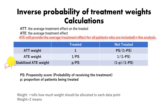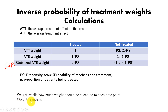The terminology 'weight' in statistics tells how much weight should be allocated to each data point. For example, if we want to allocate weight 2 for one person, that means we do not consider that person as one person — instead, we consider them as two people.